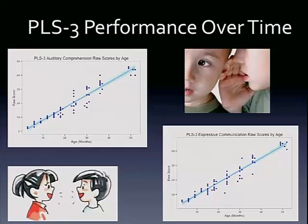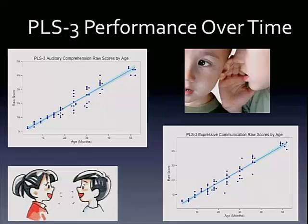First we just wanted to see what the relationship with age and raw scores on these measures was. As we would kind of hope to see, there was a very strong linear relationship — as children are getting older, they're performing better on these tasks, both auditory comprehension and expressive communication. It's actually almost a perfectly direct linear relationship, which is about as strong as you can get.